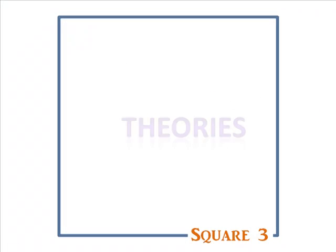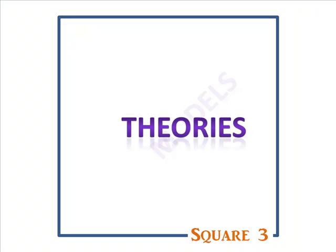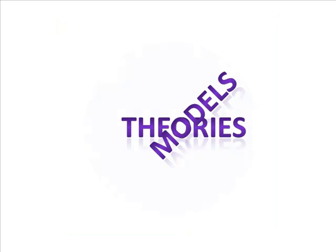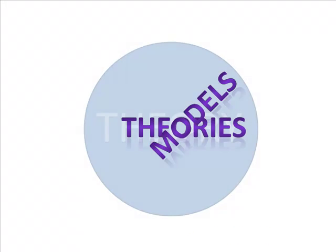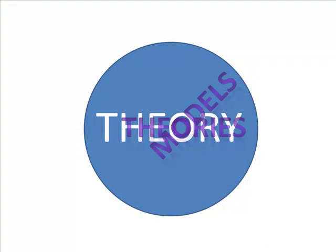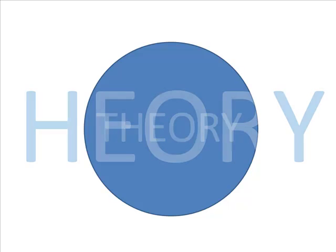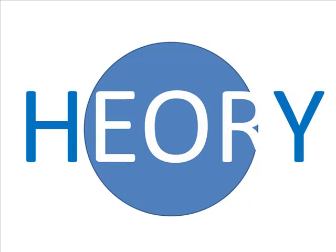Welcome to Square 3. This is where we convert theories into models and constructs into variables. Science doesn't test theories. By their nature, theories are a collection of ideas. And ideas are invisible, ethereal, and not directly testable.